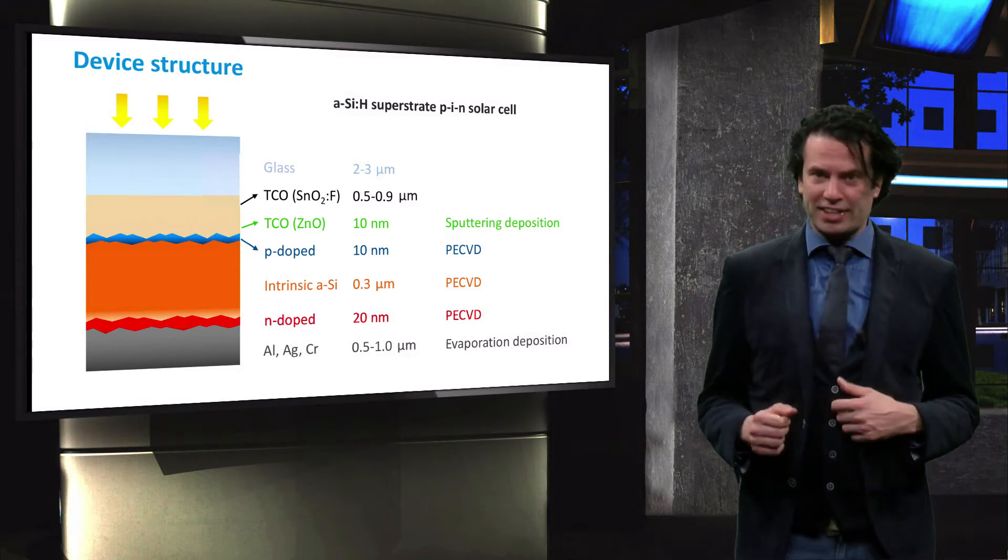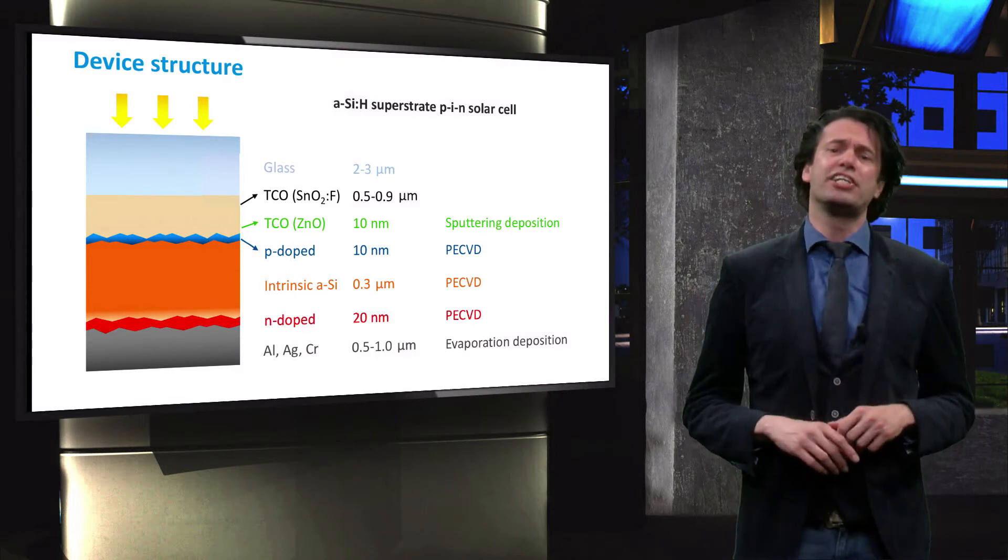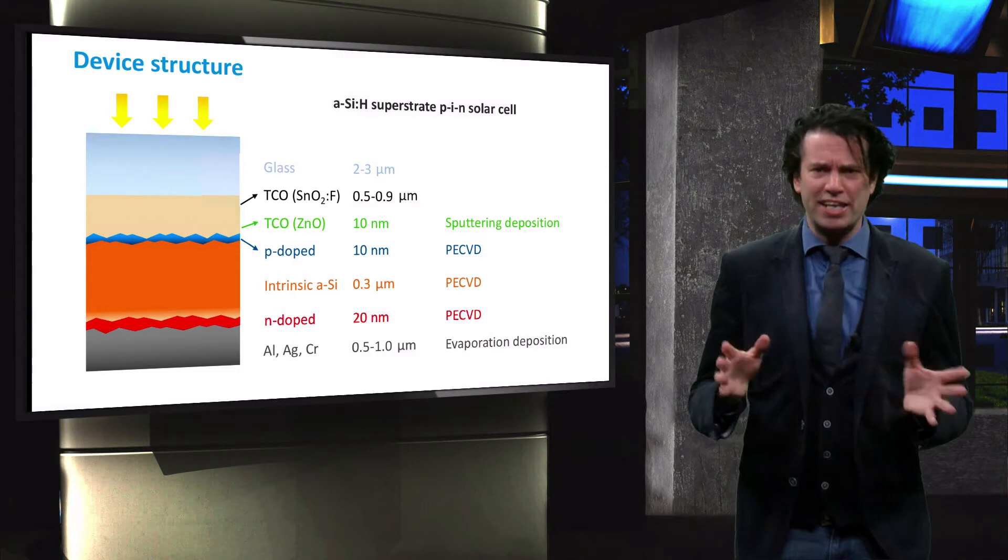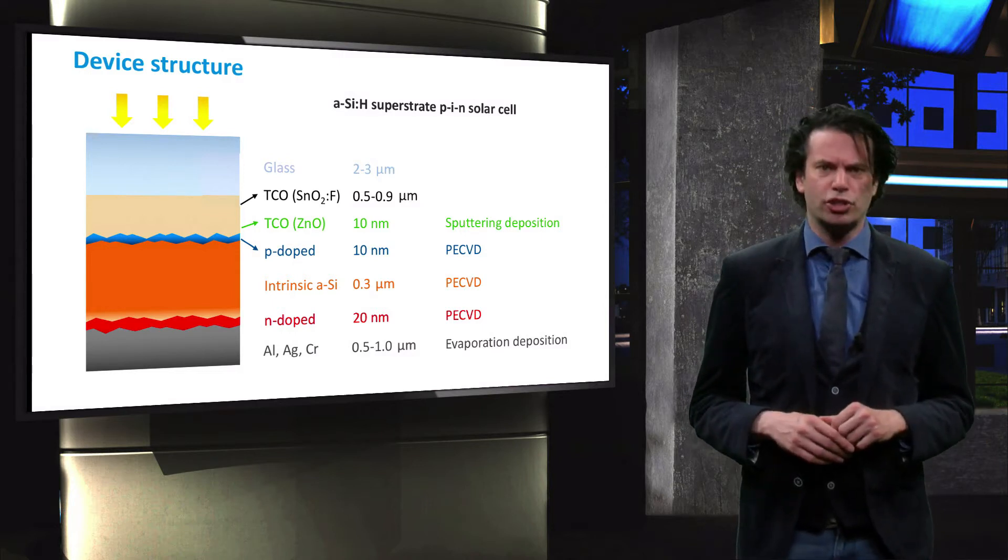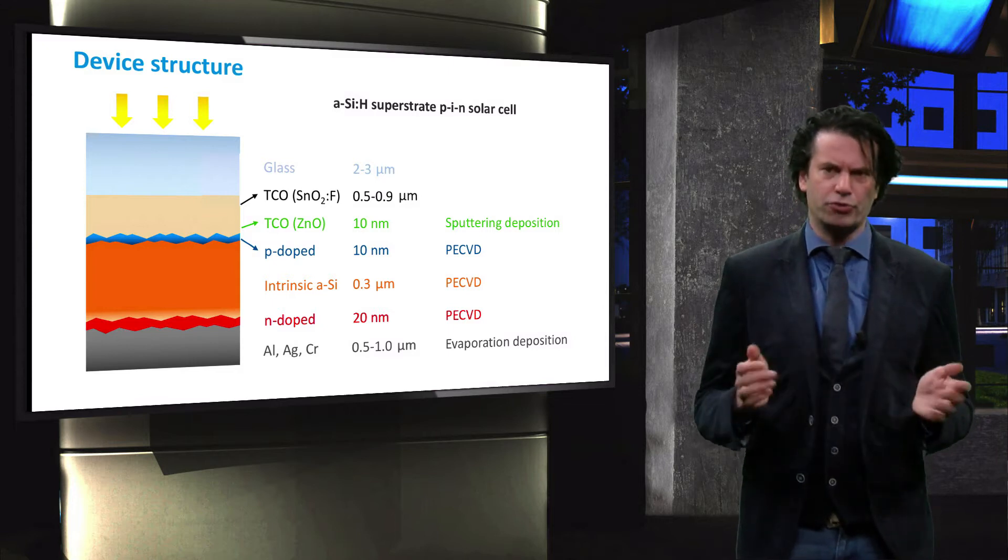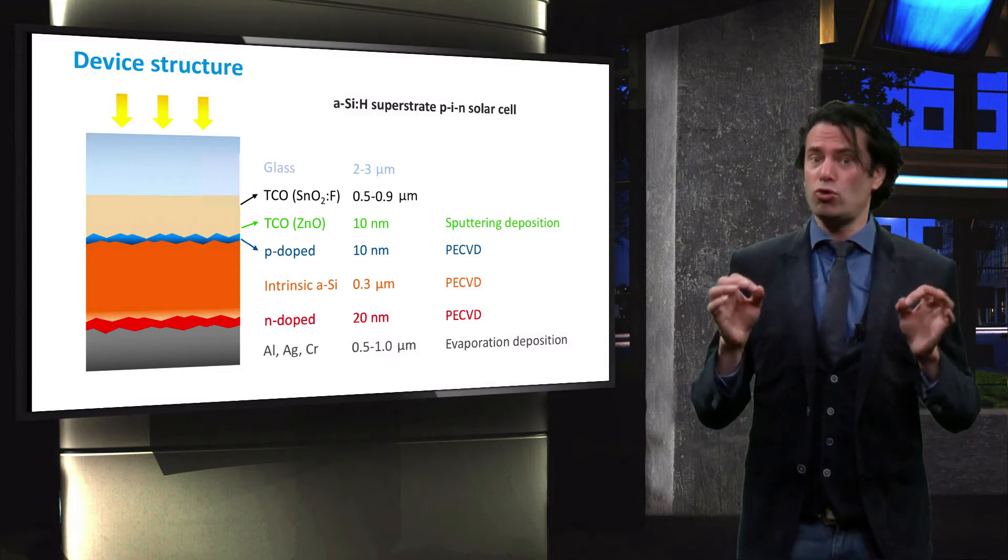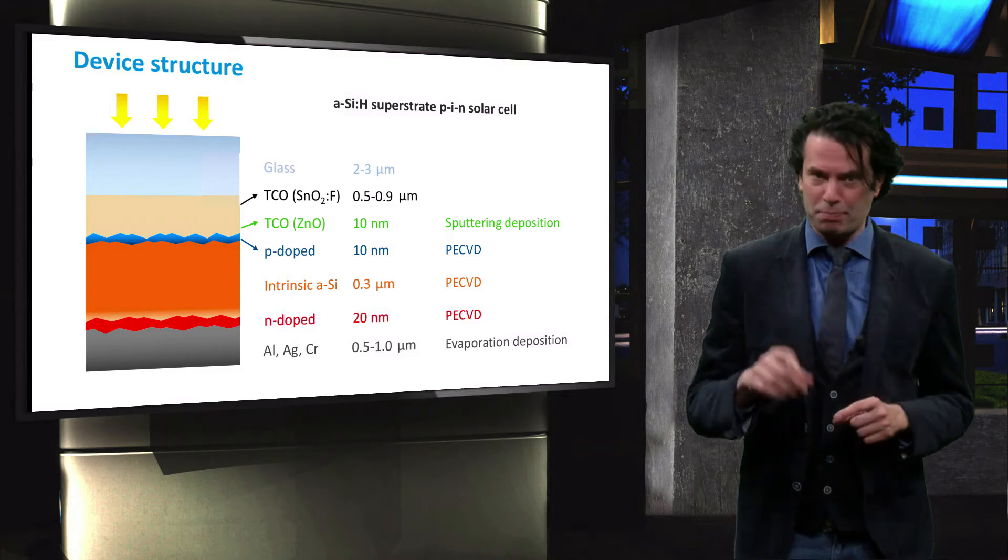After back contact deposition, there is a final annealing step where the substrates are placed in an oven for an hour at about 150 degrees Celsius to improve the ohmic contact between the individual layers. So this is how solar cells are made on a lab scale.